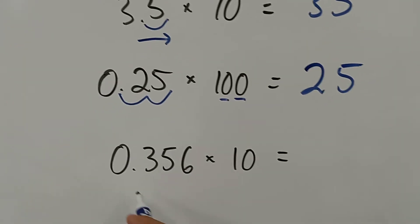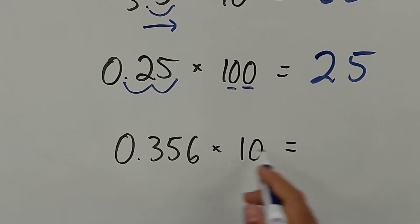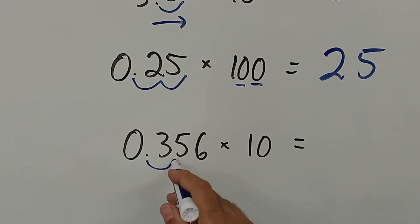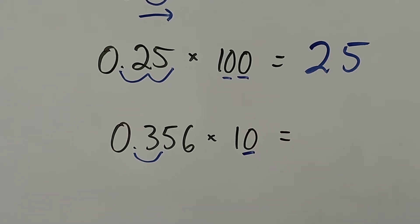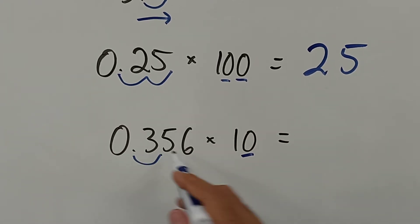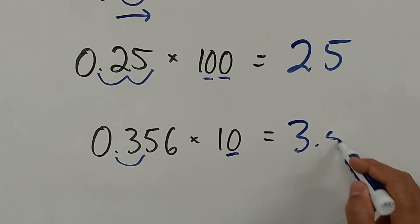And then 0.356 times 10, it moves the decimal point just one space because this one has just one zero. So it would be 3.56.